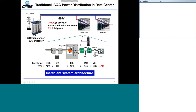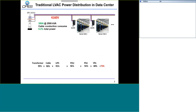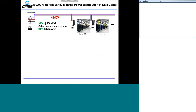So today's system is not very efficient. Our proposed architecture transfers medium-voltage AC directly to the server hall — for example, using 4 kilovolt AC as the distribution voltage. In this way, we can reduce the current on this line and reduce the conduction loss.